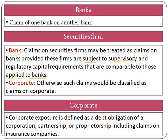Moving on to the sixth asset class: claim on corporate. In general, corporate exposure is defined as a debt obligation of a corporation, partnership firm, or proprietorship firm, which includes claims on insurance companies. Banks are permitted to distinguish exposure to SMEs. Moving on to the seventh asset class: retail portfolio.